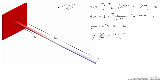In a prior screencast, we analyzed a fin in which the temperature of the base of the fin was known, and we assumed that the tip of the fin was adiabatic. In doing so, we came up with four main things: the temperature profile, the flow of heat through the base of the fin, the hypothetical maximum flow of heat through the base in the limit where thermal conductivity goes to infinity, and fin efficiency — which is the ratio of the actual heat drawn through the base divided by that hypothetical maximum.